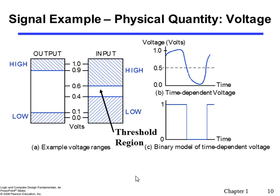Voltage is used as a physical quantity to represent two discrete binary values, with certain ranges defined. For example, an output above 0.9 volts is considered high and below 0.1 volts is considered low. For inputs, the ranges are 0.6 volts or higher, or 0.4 volts or lower. There is a threshold region where values are neither high nor low, allowing us to clearly distinguish between the two.